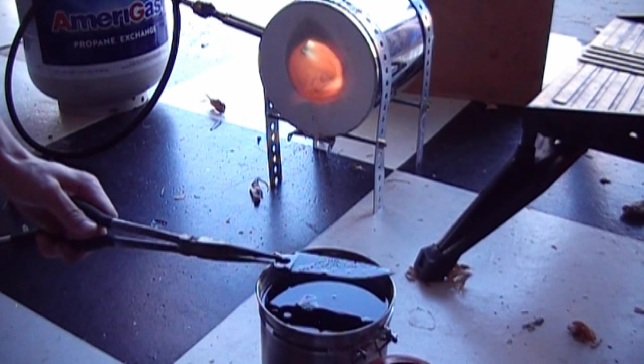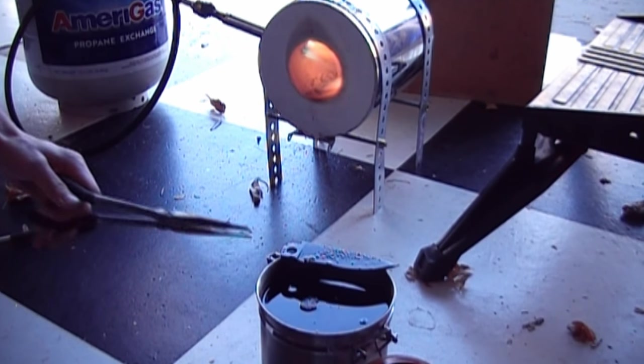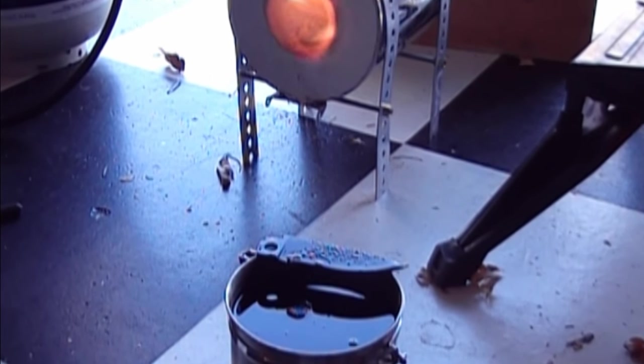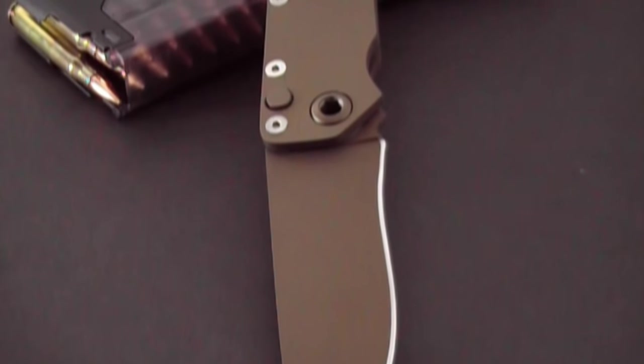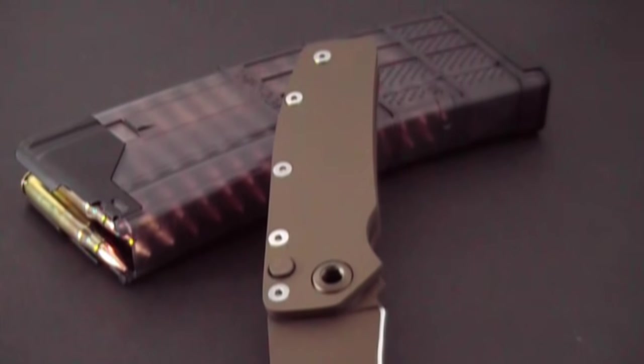After heat treating, I tempered the blade at 400 degrees for two hours in a toaster oven. I then applied a coat of Burnt Bronze Cerakote, which was the only color of Cerakote that I have.